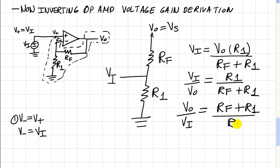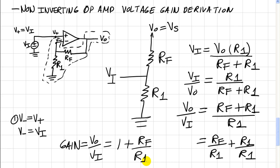So this is what we have. And so that is equal to RF over R1 plus R1 over R1. And of course, we know that R1 over R1 is equal to 1. So our final answer is 1 plus RF over R1.